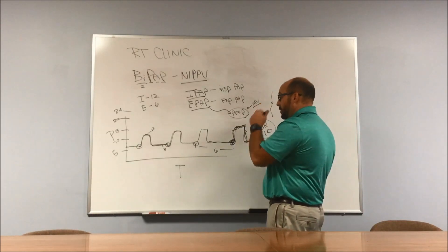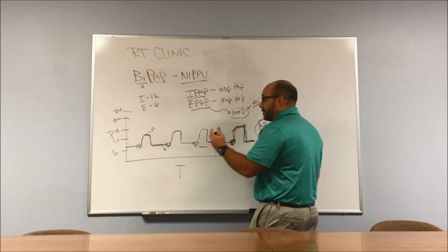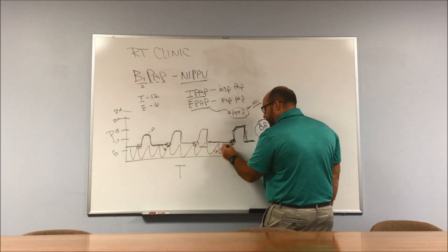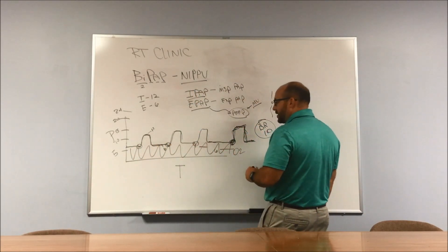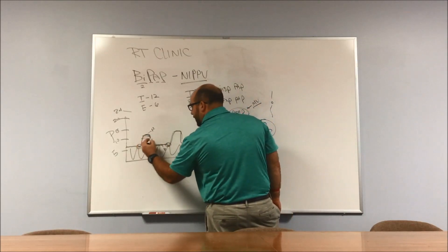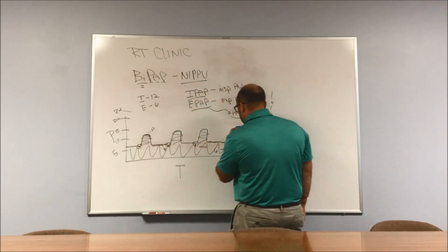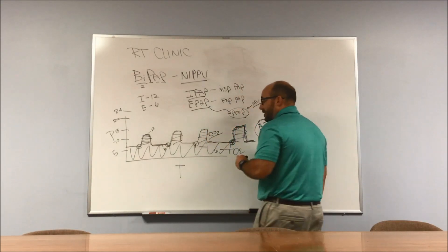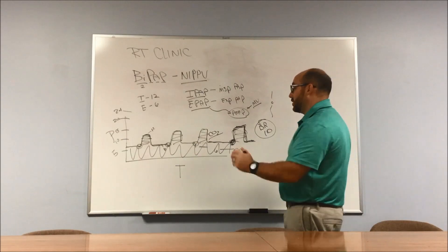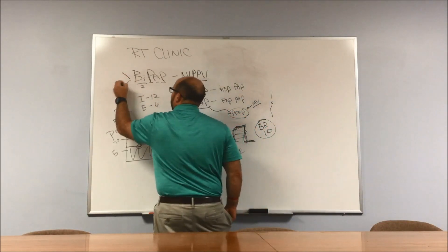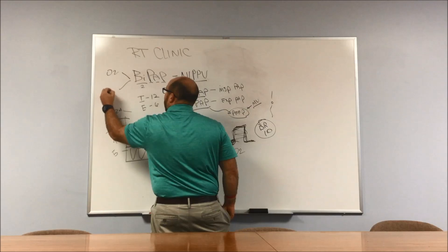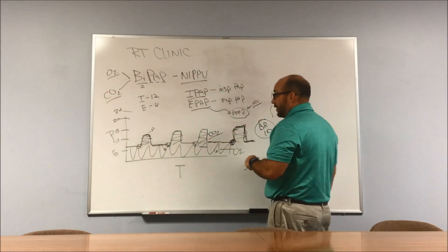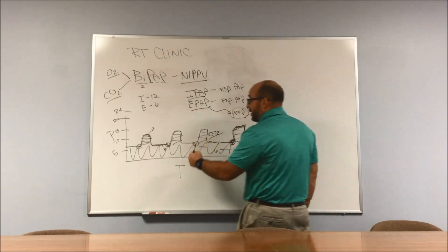Anyway, what BiPAP does - the best way to think of it, the best way that I always think of it is this area right here, that's our area of ventilation. When I say ventilation, I always say synonymous with CO2, so getting CO2 out. So BiPAP does two big things: oxygenates and ventilates. Oxygenates, gets rid of CO2 - two different things, which is really great.